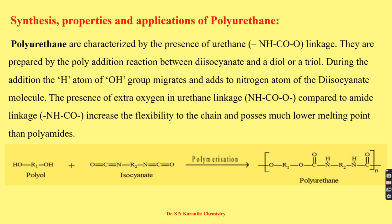Diols and diisocyanates undergo a poly addition reaction. Although it looks like a polycondensation reaction, they are actually prepared by poly addition. During the reaction, the hydrogen atom present in the diol migrates and links to the nitrogen atom of the diisocyanate, resulting in the urethane linkage NHCO. Because of this urethane linkage, polyurethane is highly flexible with much lower melting points compared to amide.